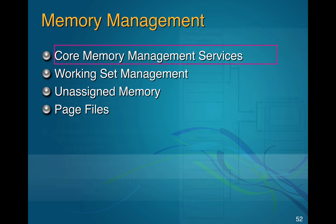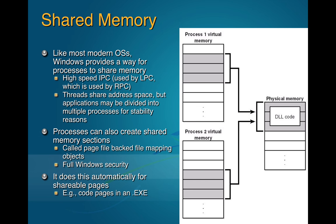For memory management, each process has its own virtual memory space. In the malware analysis class we discuss how every process thinks it is at address 0x400000 — they all think they're at the same address because it's a virtual address with a constant offset the internal process doesn't know about. So no address in one process can write to another process's memory — it's in its own little virtual machine-like environment. However, they can share DLL code, and you can create shared memory sections if you want processes to communicate.